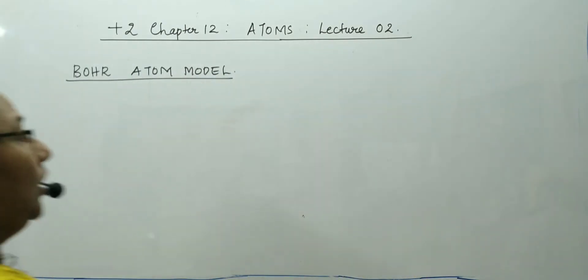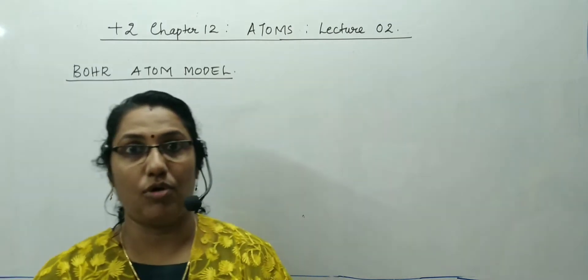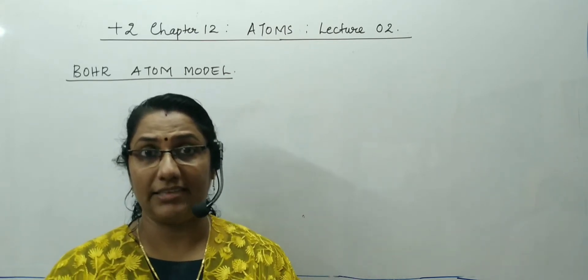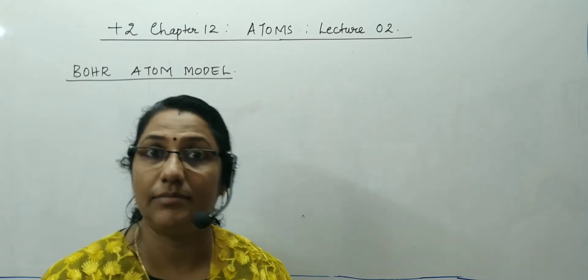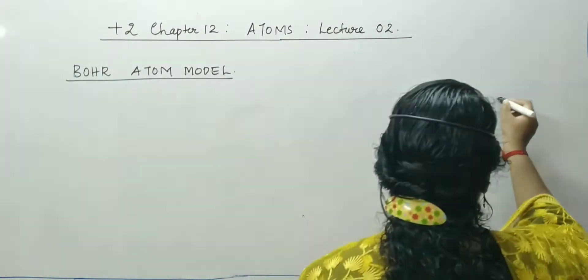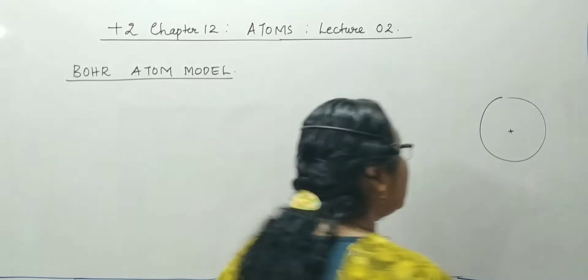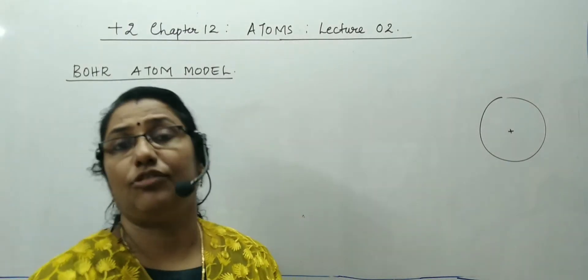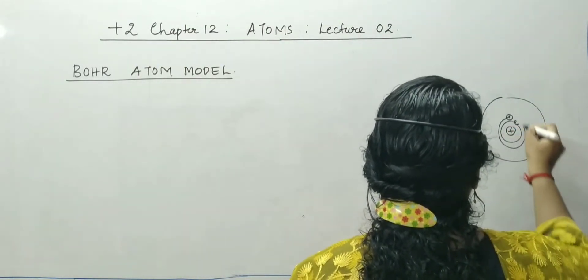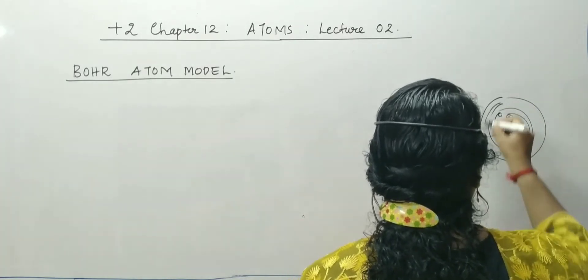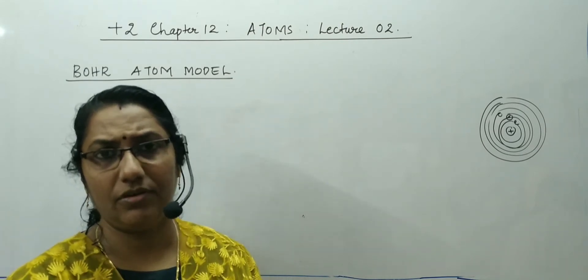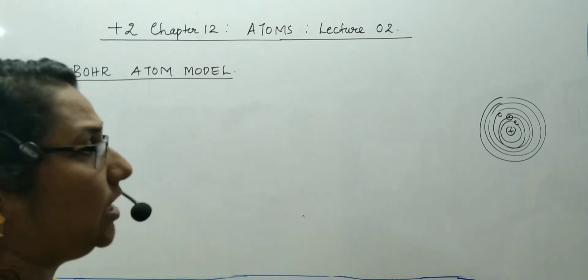What was Rutherford's nuclear model of atom? From the alpha scattering experiment, he proved that most of the space inside the atom is empty. But there is a very small, positively charged, heavily dense central region called the nucleus. And electrons are revolving around the nucleus through any circular orbit. Those were the postulates of Rutherford's atom model.